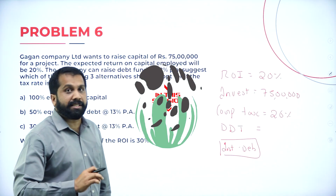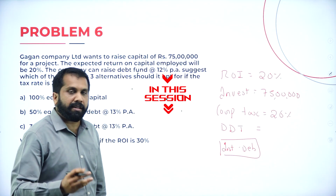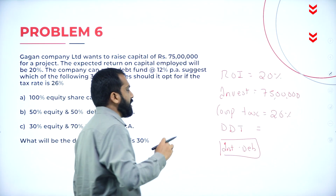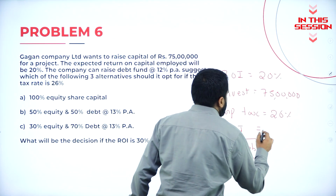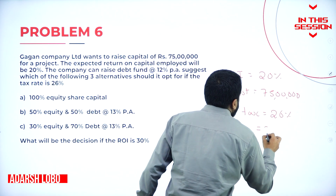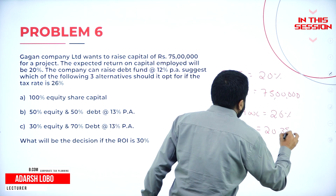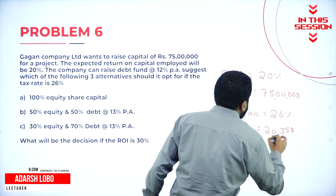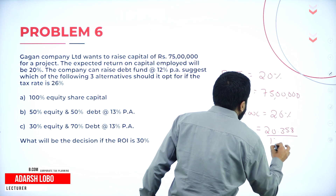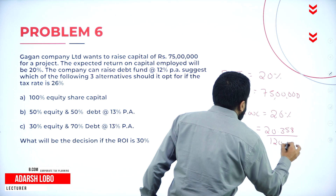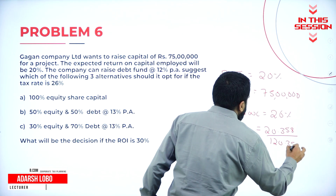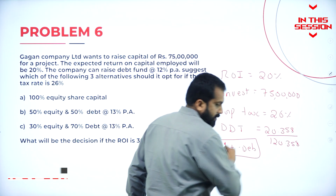Dividend distribution tax is not given. Still, we are supposed to remember 20.358 divided by 120.358.